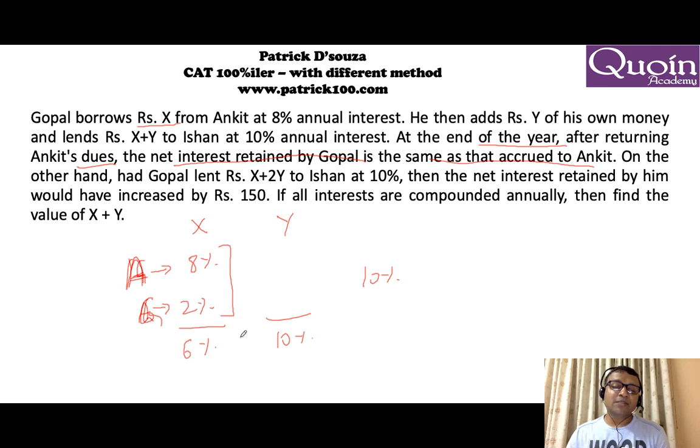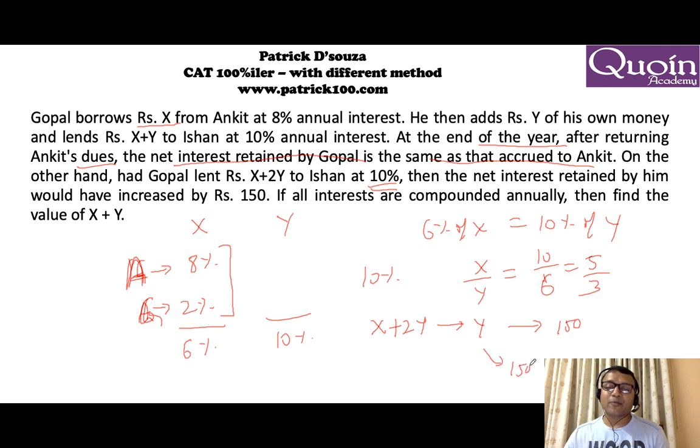Here Ankit has 6% extra and here Gopal has 10%. So if the ratio of the interest earned by them is 6 to 10 and remember we need to have the same amount. So 6% of X should be equal to 10% of Y because the interest earned should be same. So automatically we get X upon Y as 10 upon 6 or 5 upon 3. So we know X and Y are 5 upon 3. Now when you give Y extra, now he gives X plus 2Y that means he gives Y extra. He gets 150 rupees interest. Now 150 is 10% that means the principle Y has to be 1500. Remember 10% of Y gives you 150. So Y should be 1500.